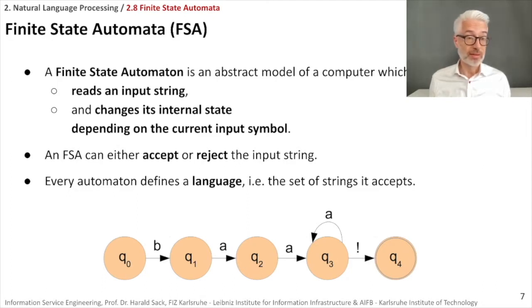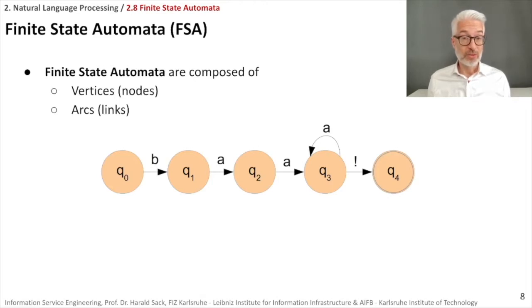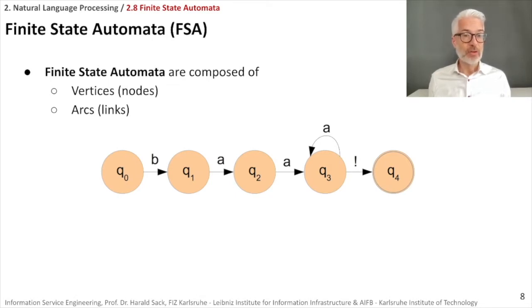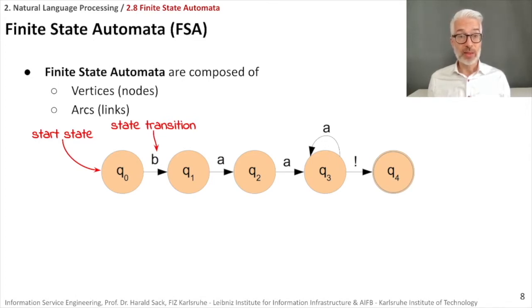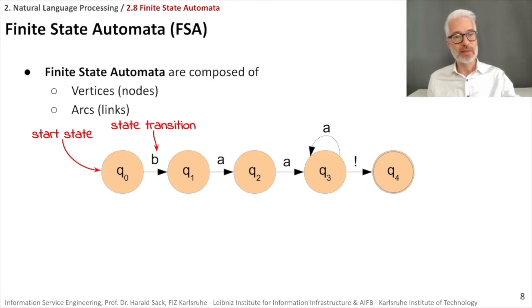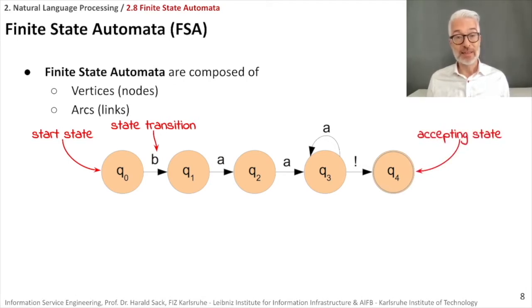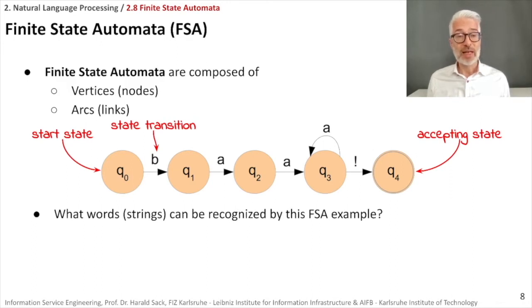Usually, when you draw a finite state automaton you draw the states with the help of vertices or nodes — it looks clearly like a graph. The state transitions are arcs. You start at one end and indicate the starting state: q sub 0 is the starting state in our example. The edges between nodes show state transitions, labeled with the input symbol being read. So if a 'b' is read, the state q sub 0 changes to q sub 1 and the input pointer goes one step further. In the end, if everything works out, you end up in a so-called accepting state and the automaton accepts the input string.